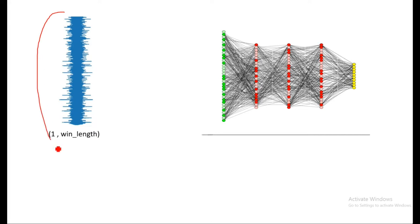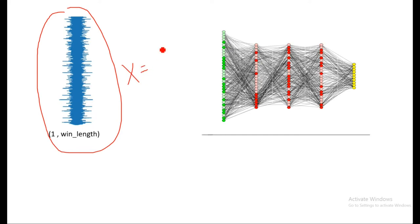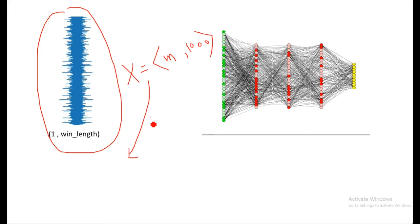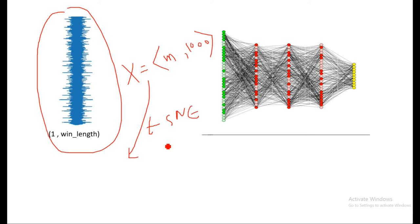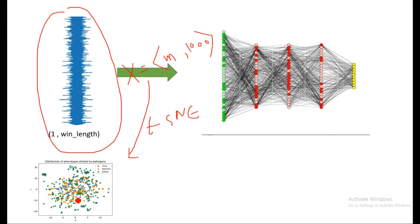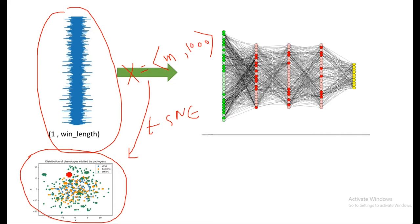My input data to the neural network has M samples, each with 1000 dimensions. Before any pre-processing, I want to do a t-SNE dimensionality reduction of this raw data and see if the different fault classes are distinguishable. I'll show this in the Jupyter notebook — whether the raw data is separable or not. Once this t-SNE is done on raw data, I'll also train the neural network and then extract the penultimate layer output to do another t-SNE plot.